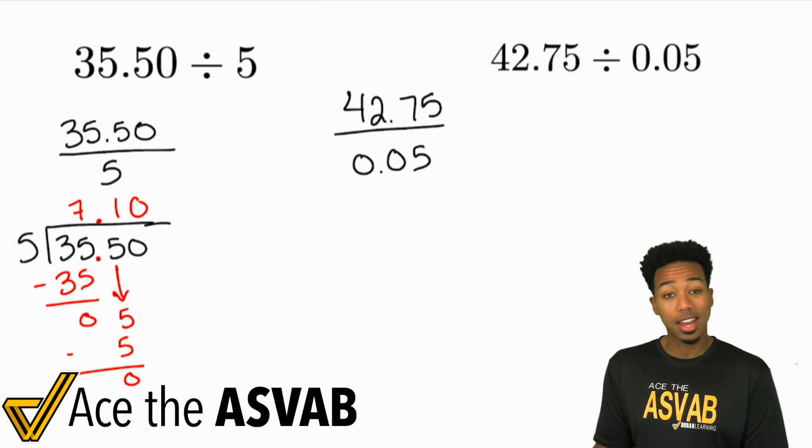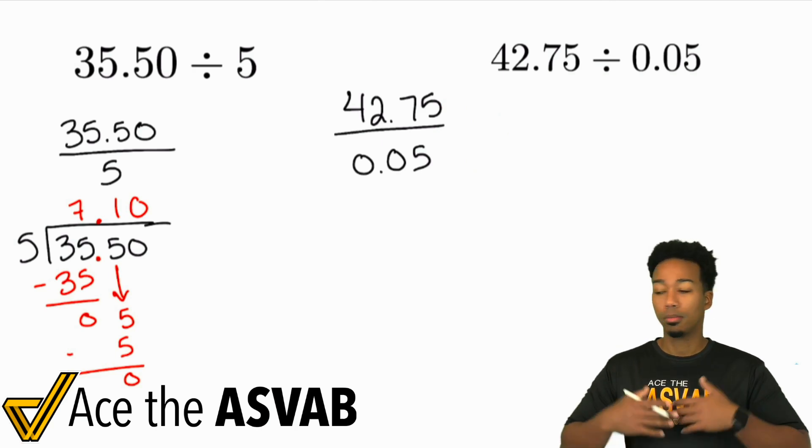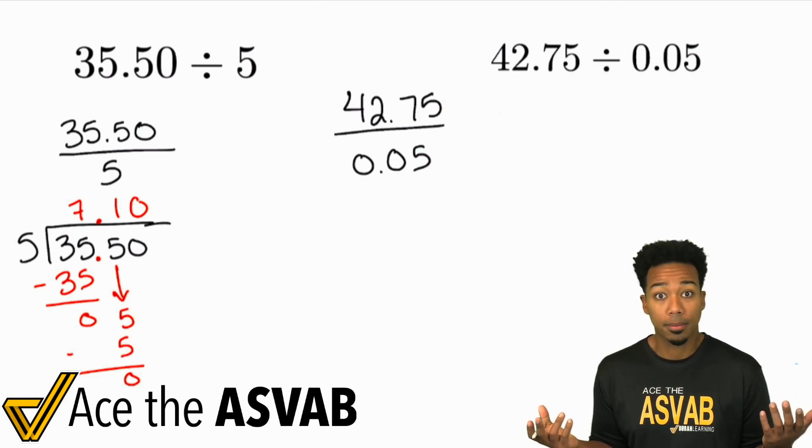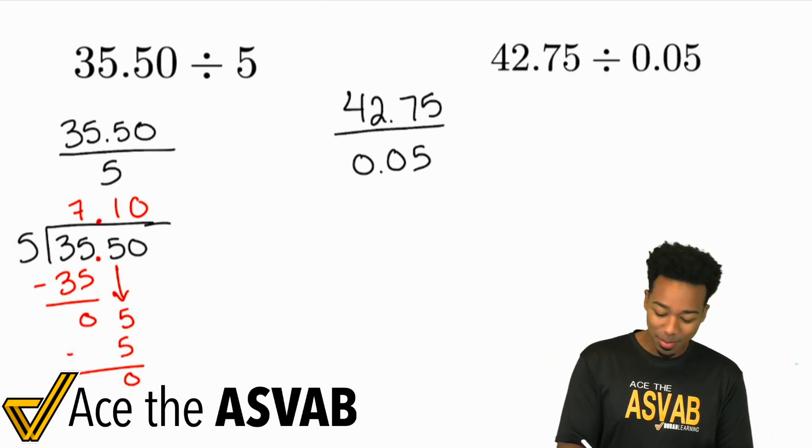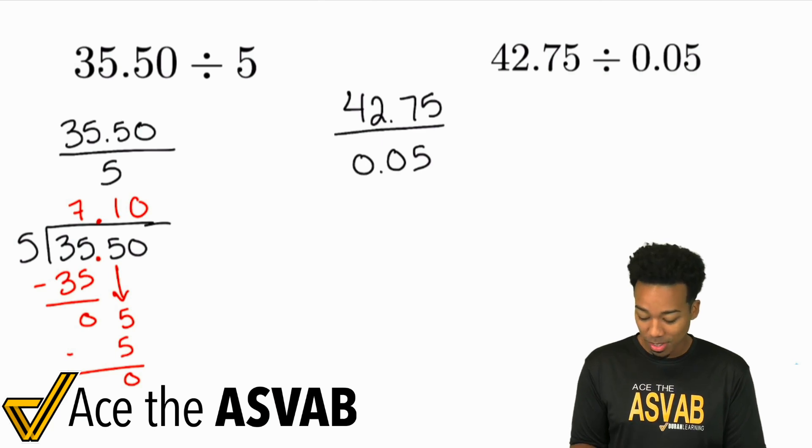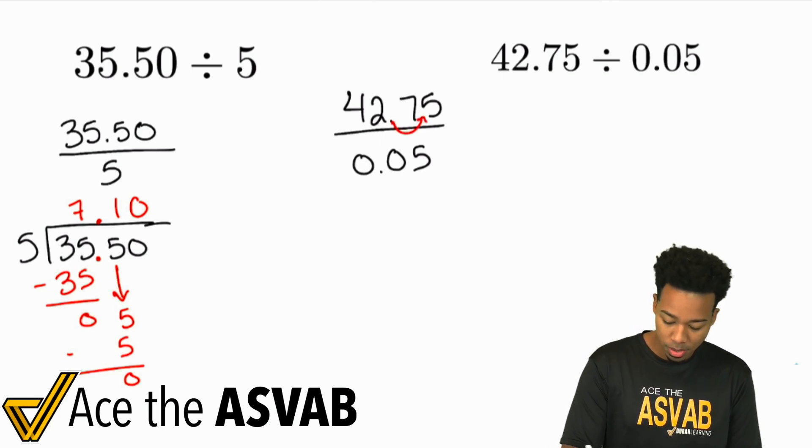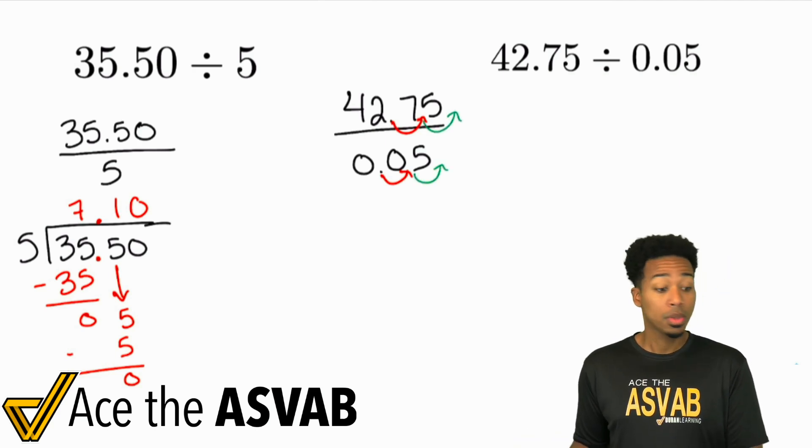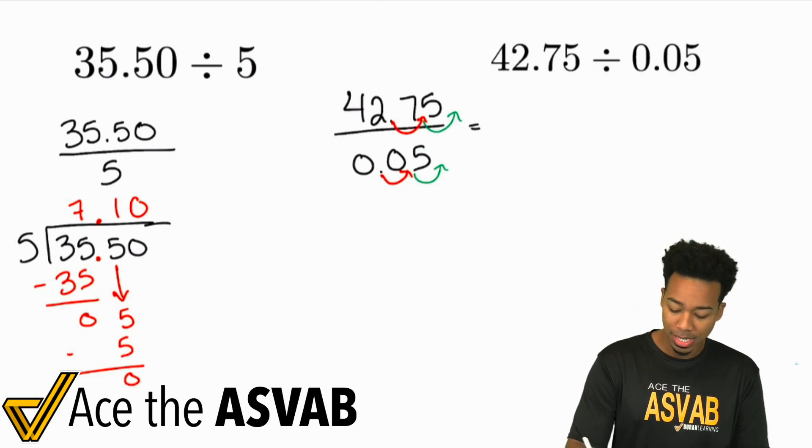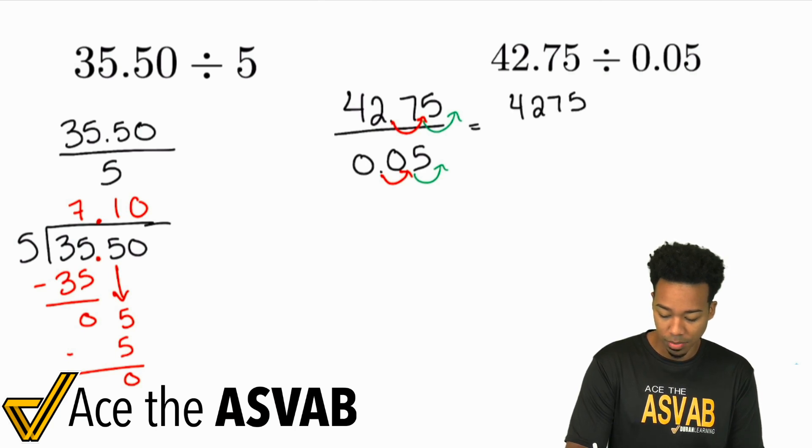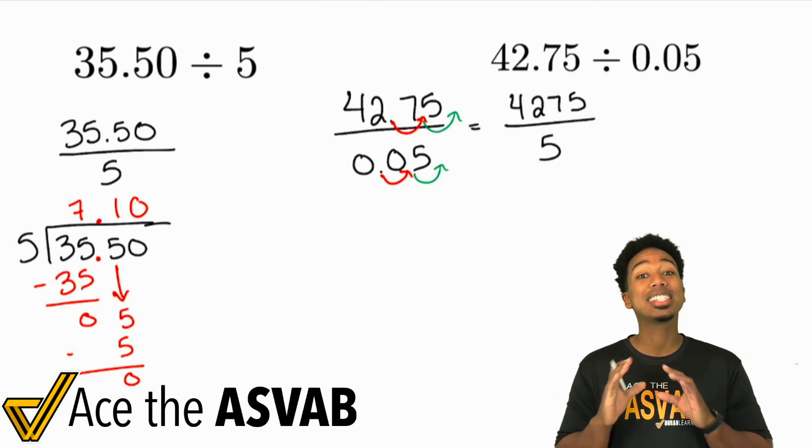Well, remember this, whatever you do to one side of the fraction, you do to the other. I meant to say equation, but either way, you get the point. Whatever you do to the numerator, you do to the denominator and vice versa. That includes multiplying and dividing whatever numbers you want. So what am I saying? What I'm saying is you can just go ahead, if you're dealing with dividing by a decimal, just go ahead and do this. Move your decimal over one time, move your decimal over two times and you're good. 42.75 divided by 0.05 is the exact same thing as 4,275 divided by 5. They're the exact same thing.